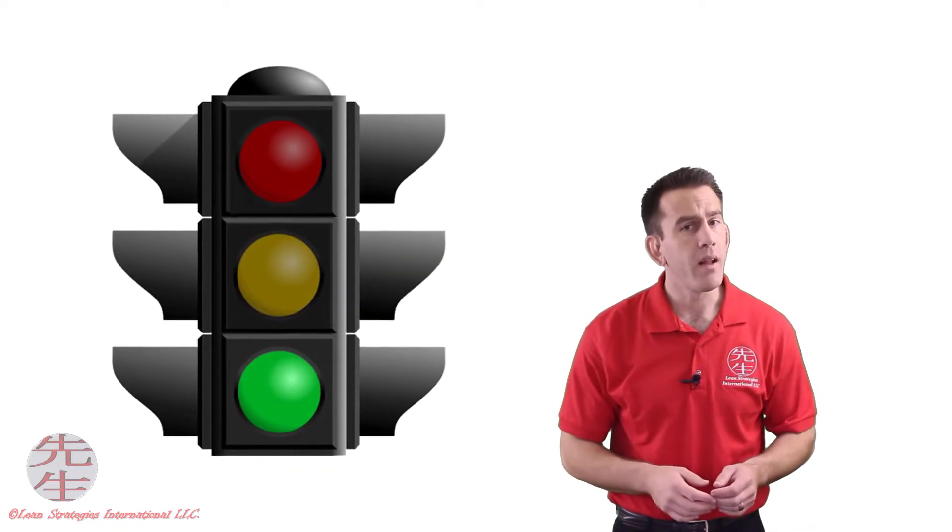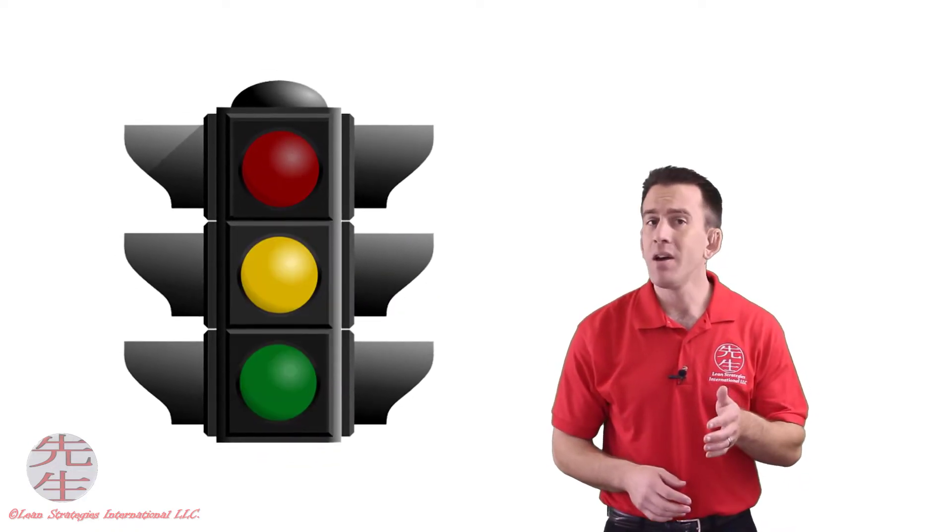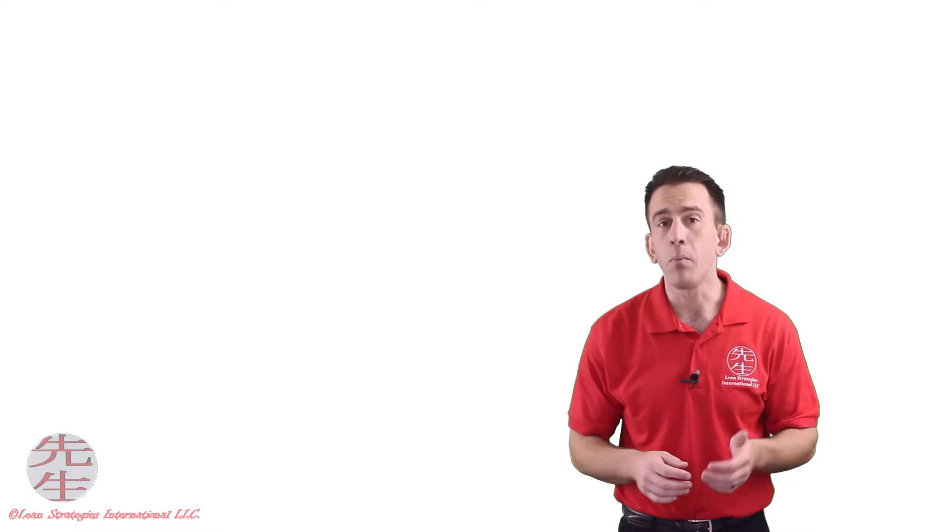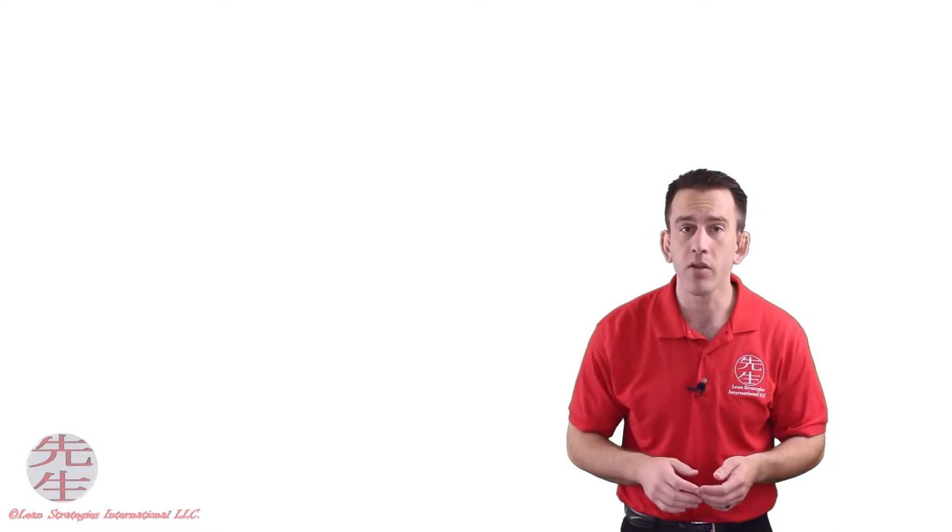In most countries, a red light signals us to stop, a green light tells us we can go, and a yellow light alerts us that a red will soon follow. These visuals trigger information that helps keep us safe and prompts us to take action based on the visual message we see.